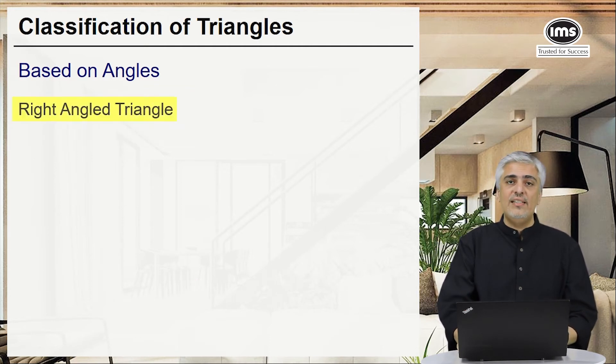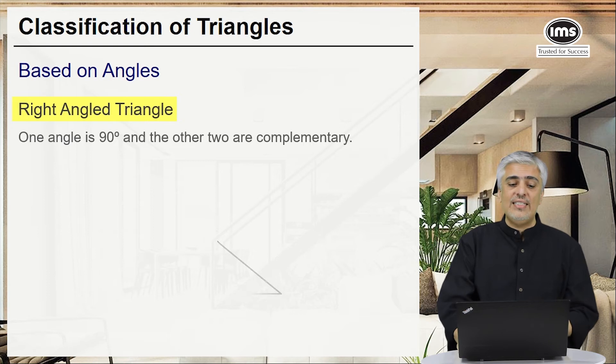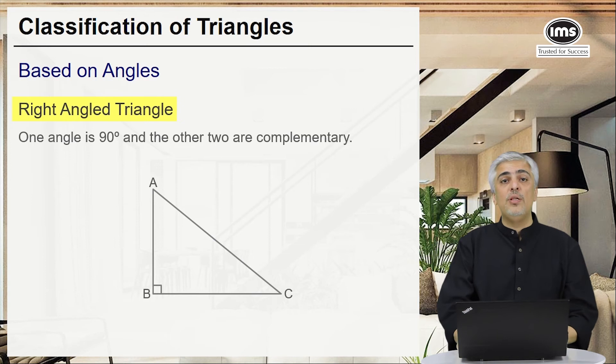The next would be a right angle triangle. I'm sure you've heard of that before. A right angle triangle is a triangle where one angle is 90, and hence automatically the other two angles become complementary.